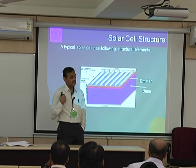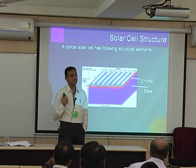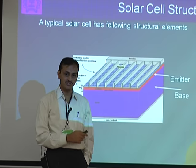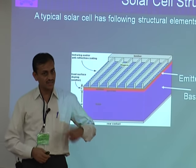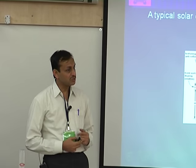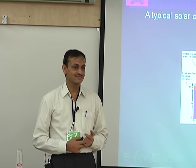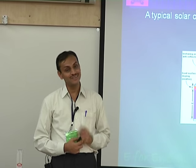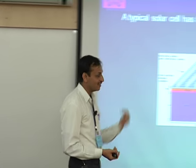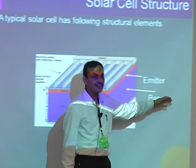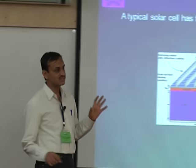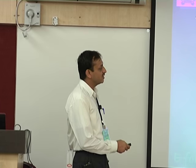When solar cells started in the early 1950s, people were doing the opposite — base was N-type, junction was P-type. Then people realized that P-type base and N-type emitter is better. Now people are again realizing that N-type base and P-type emitter is better. But most of the industry right now is P-type base, N-type emitter.